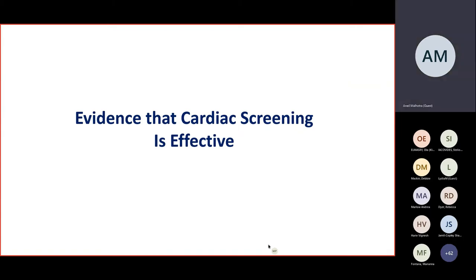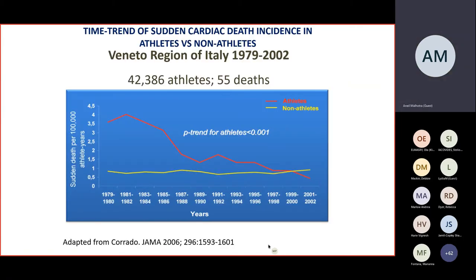What's the evidence that cardiac screening is effective? The Italian experience has always been put forward to support this argument. They reported a reduction of sudden cardiac death among screened athletes — represented by the red line — over two decades, with a rate falling from 3.6 to 0.9 per 100,000 person years in those who were screened, falling below the level amongst unscreened non-athletes.